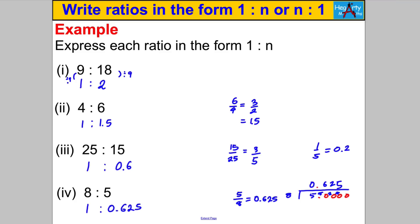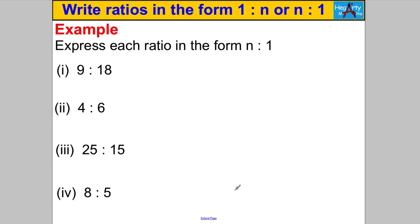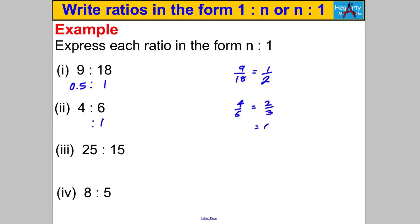Next set — pause and have a go. For 9:18 with the first number as 1: divide both sides by 9, giving 1 over 2, which is 0.5, so 1 to 0.5. For 4:6 with the first number as 1: divide both sides by 6, giving 4/6 = 2/3, which as a recurring decimal is 0.6 recurring — so 1 to 0.6 recurring.